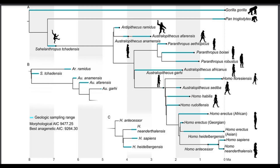Australopithecus encompasses several species: Afarensis, Africanus, Anamensis, Barel-Gazali, Deiuramida, Garhi, and Sediba. As paleoanthropologists frequently fight over what qualifies an individual as a particular species — which of course makes perfect sense in light of evolution — there may be yet more species of Australopith that simply haven't been described.